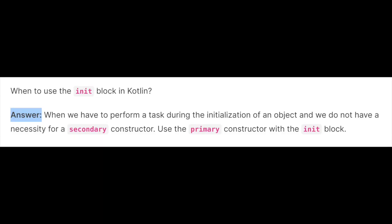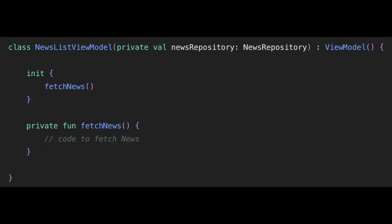The next question is: when to use init block in Kotlin? The answer is when we have to perform a task during the initialization of an object and we do not have a necessity of a secondary constructor — use the primary constructor with the init block. For example, in our Kotlin Android project, we can use the init block in a ViewModel. Here we have the NewsListViewModel which gets the repository from the primary constructor, and from the init block we call the fetchNews private function.